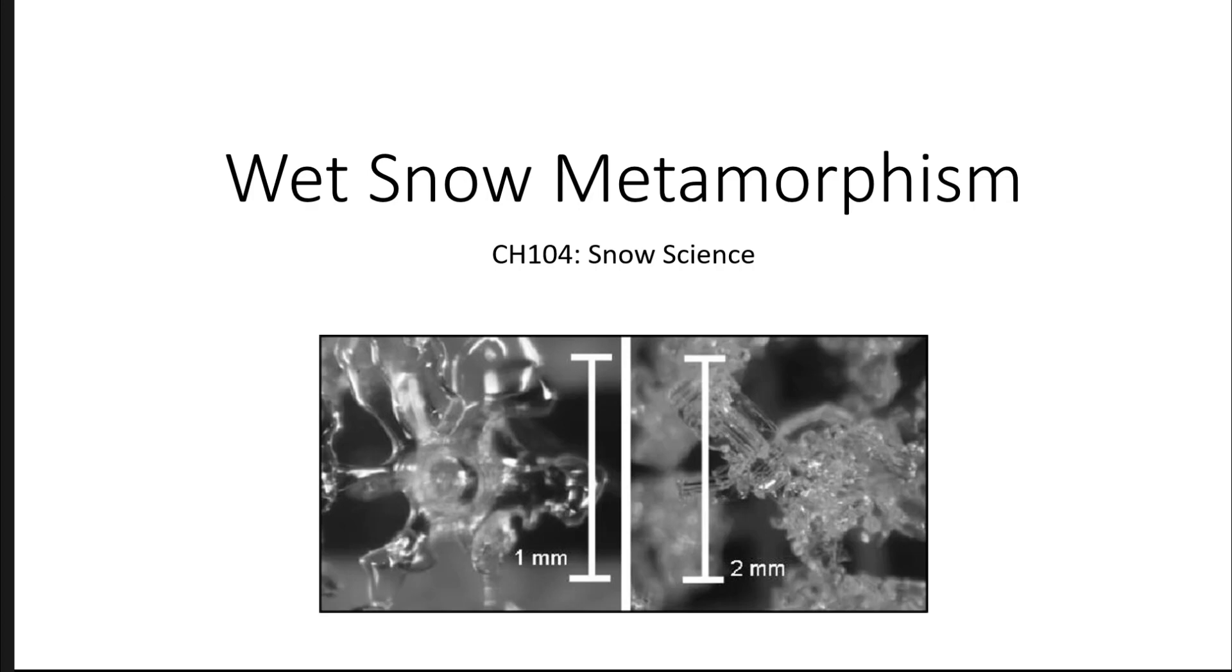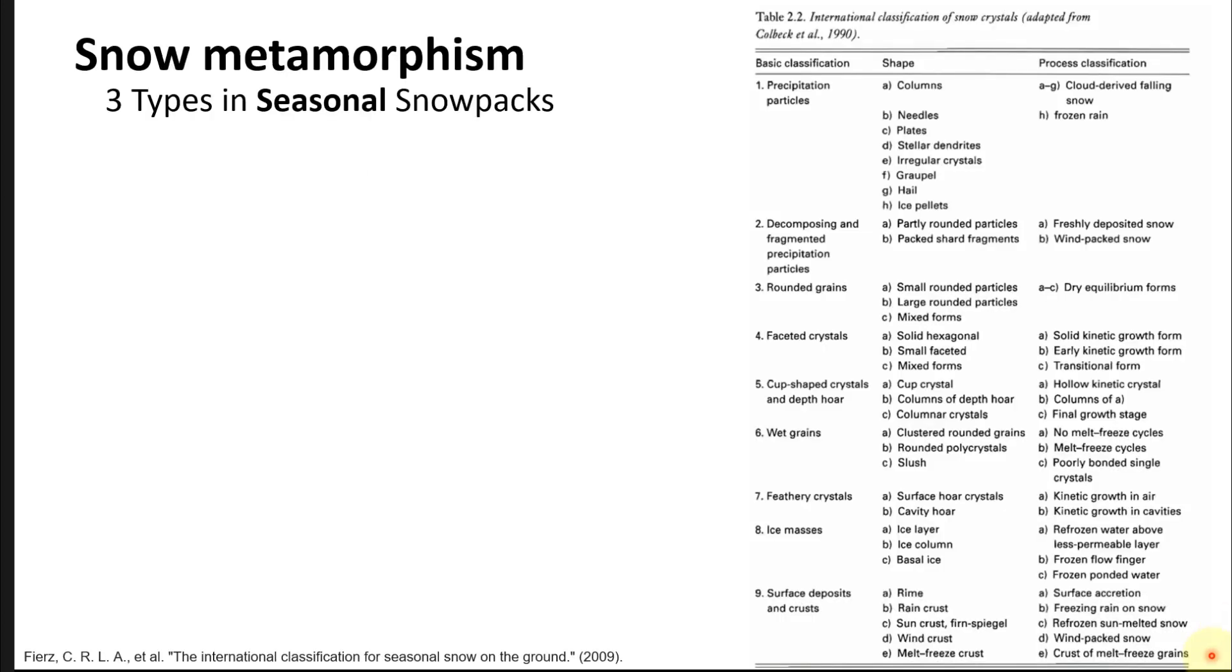This is intended to be a companion to a previous discussion of dry snow metamorphism in the snowpack. Snow metamorphism is often grouped into either two or three different categories in typical seasonal snowpacks. What I have on the right is a table borrowed from the international classification of snow crystals.